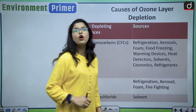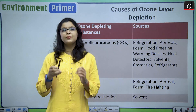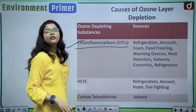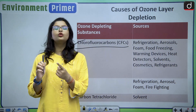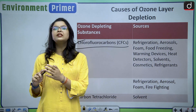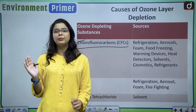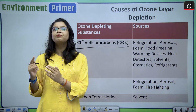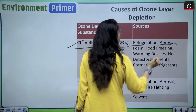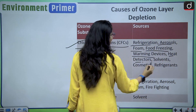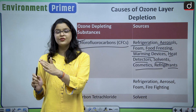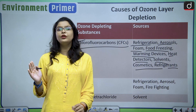Now let us analyze the causes of depletion of the ozone. There are substances known as ozone depleting substances. The first is chlorofluorocarbons (CFCs). The sources of CFCs include refrigeration, aerosols, foam, food freezing, warming devices, heat detectors, solvents, cosmetics and refrigerants. CFCs are even present in cosmetics used in daily life and are very harmful to the ozone layer.